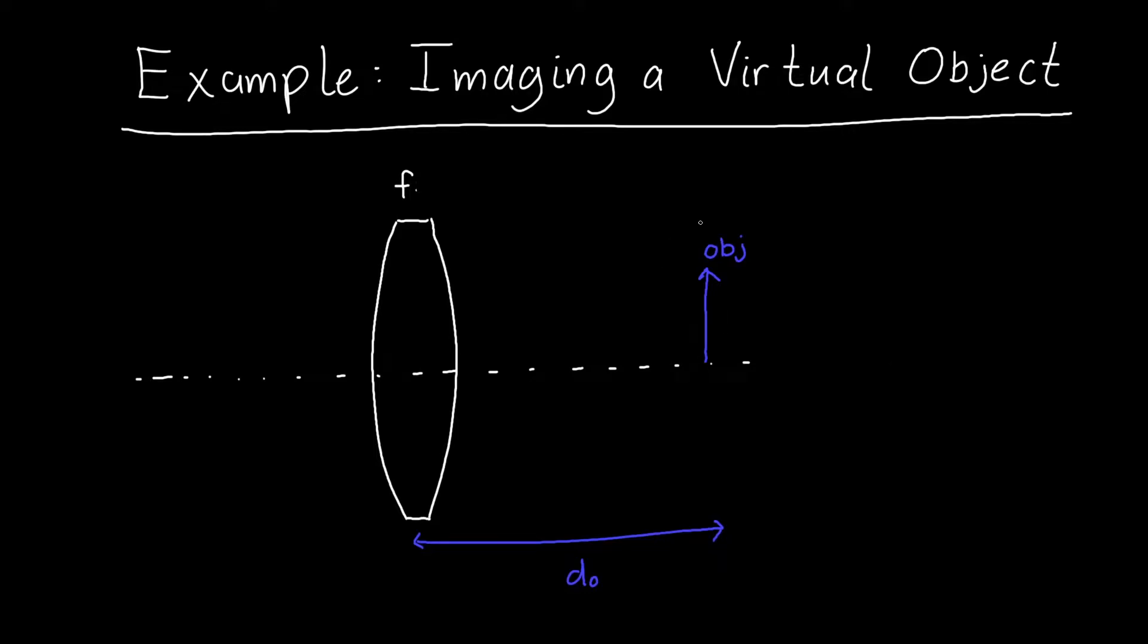In this video we're going to learn how to image a virtual object using a converging lens, and we're going to use both the imaging equation and ray tracing.